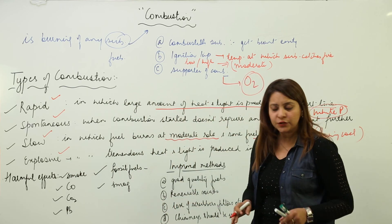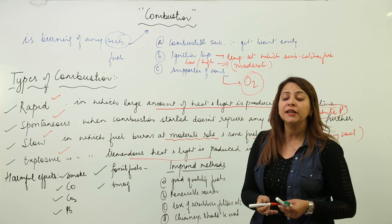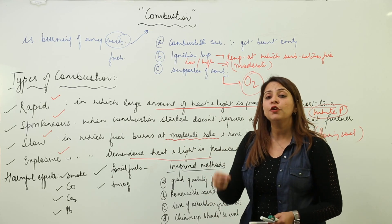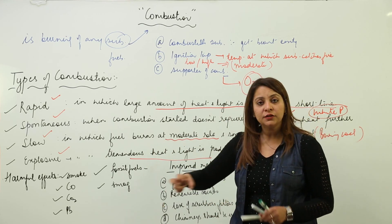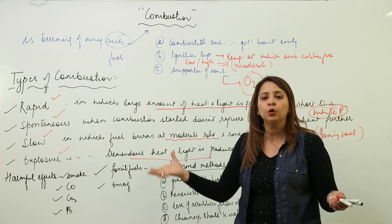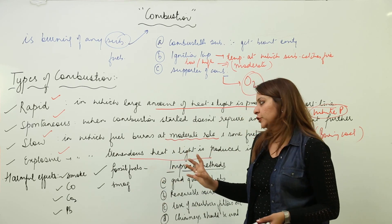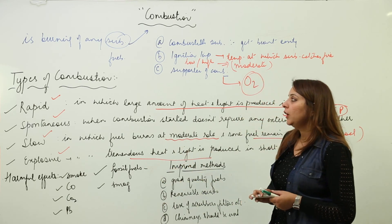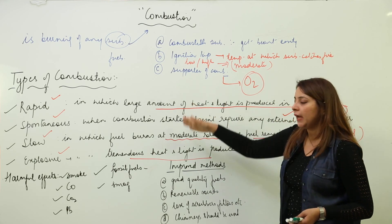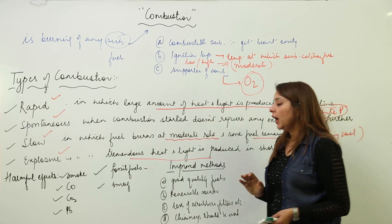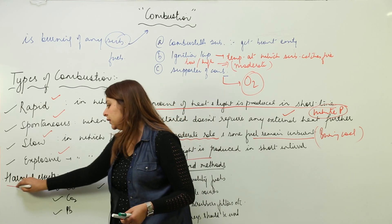Explosive combustion, as the name suggests, takes place at a very fast rate and tremendous heat and light are produced. For example, when you light a cracker, it leads to an explosion — that is explosive combustion. So these are the conditions and types of combustion.